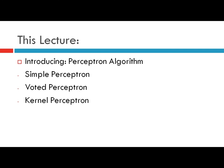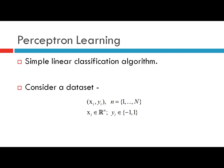Let us first consider the simple perceptron learning algorithm. The problem we'll consider is a linear classification problem where the data set is linearly separable. The perceptron learning algorithm in its simplest form is a linear classification algorithm. We are given a data set with instances X_i and labels Y_i, where Y_i takes the value either negative one or positive one, determining the class of instance X_i.